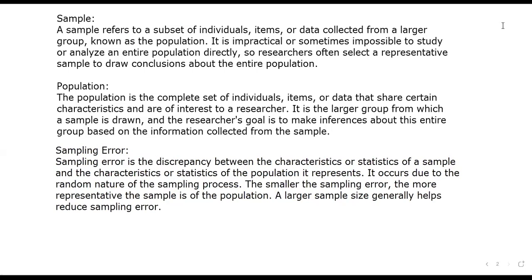Sampling error occurs due to the random nature of sampling. The larger the sample size, the more representative the sample is — larger samples usually help reduce sampling error. So a higher sample size usually has a smaller sampling error: the more the sample size, the lesser the sampling error, the more accurate it is.